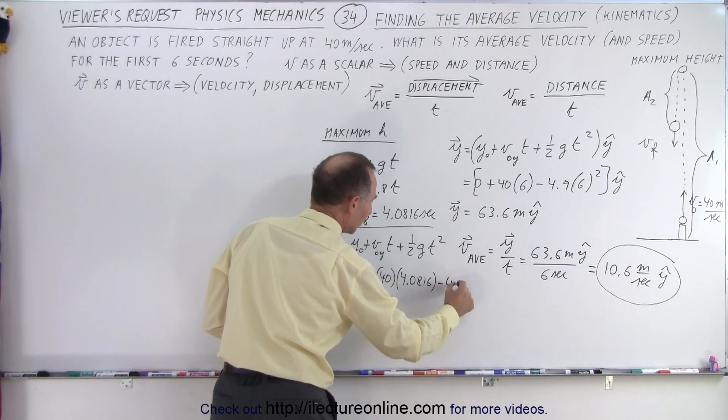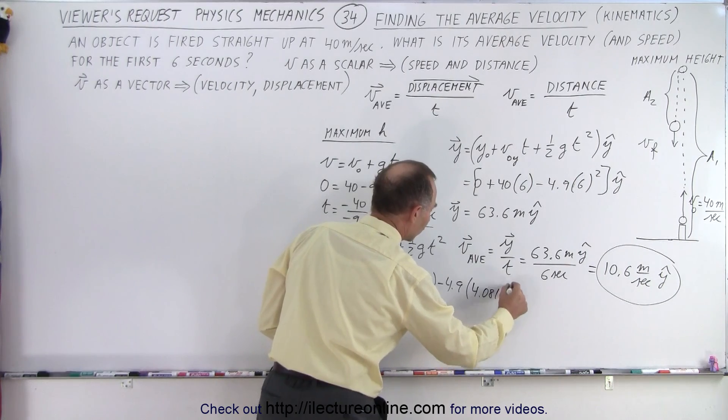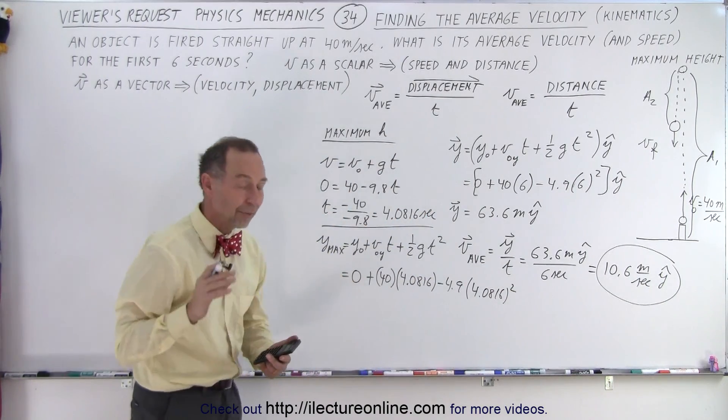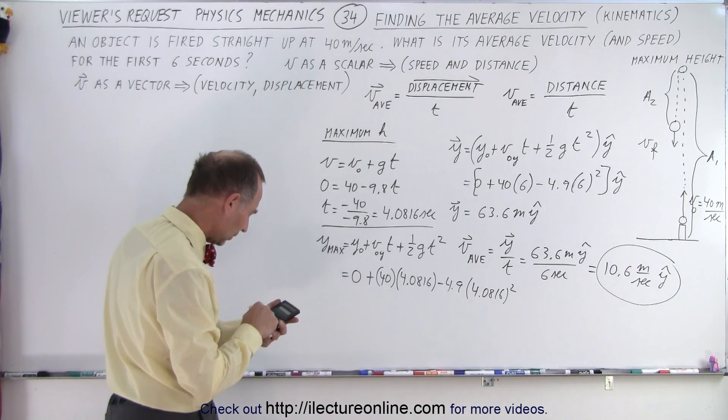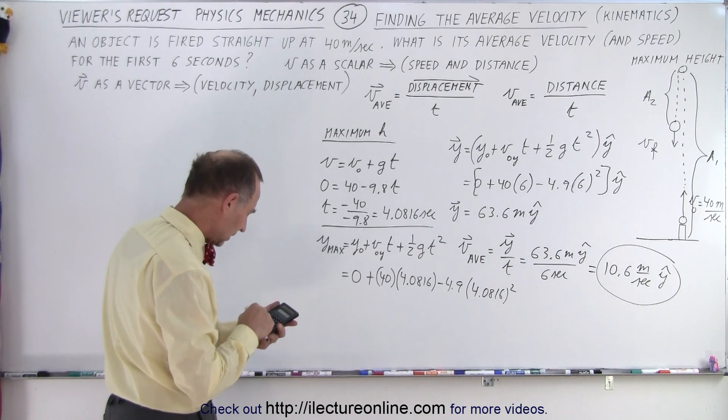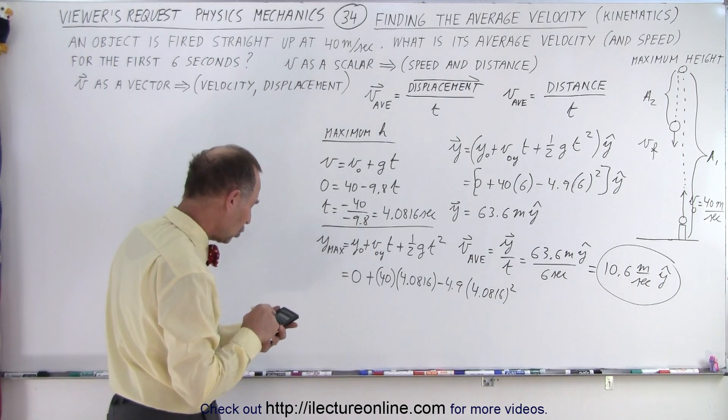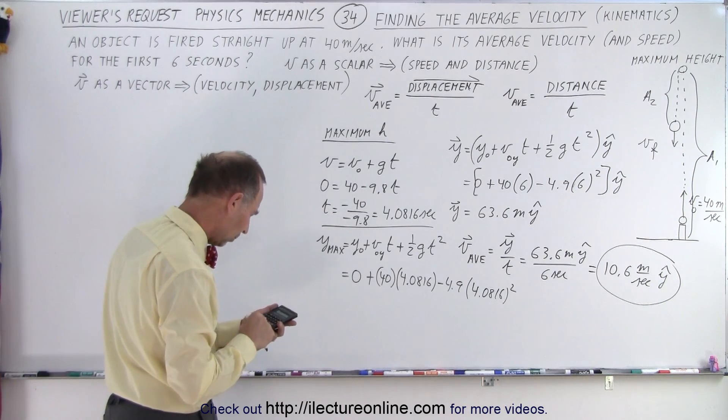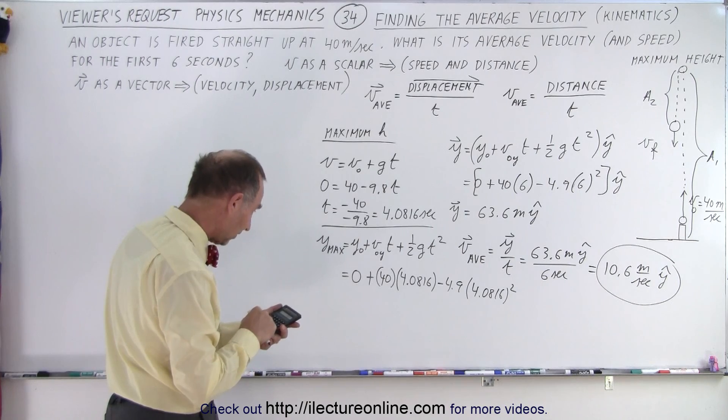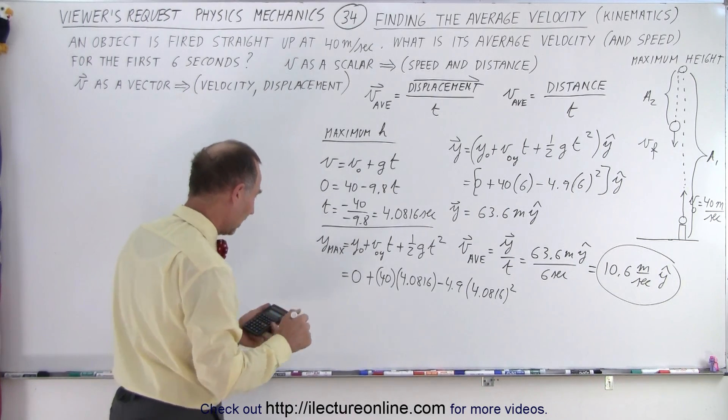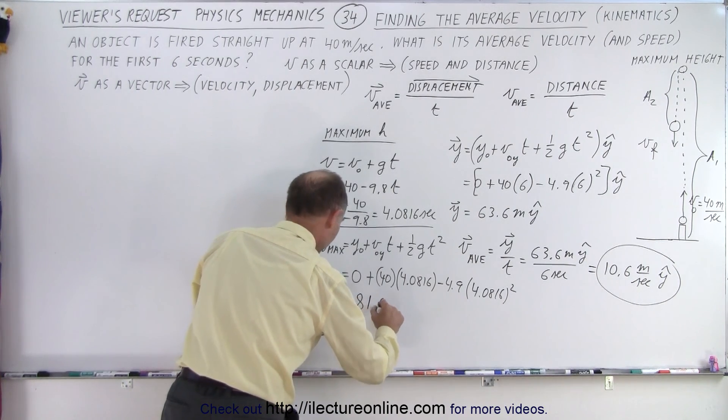Minus 4.9 times 4.0816 squared. So that'll give us the maximum height attained. So we'll take that number squared times 4.9 and add that to that value right there. So plus 4.0816 times 40 equals, and we get a maximum height of 81.63 meters.